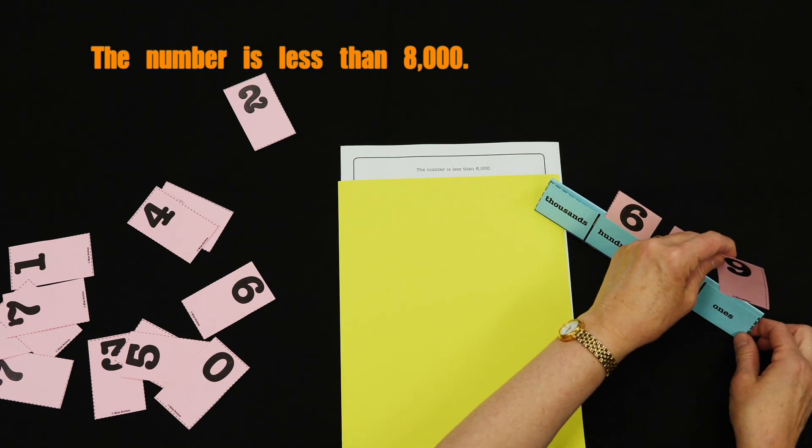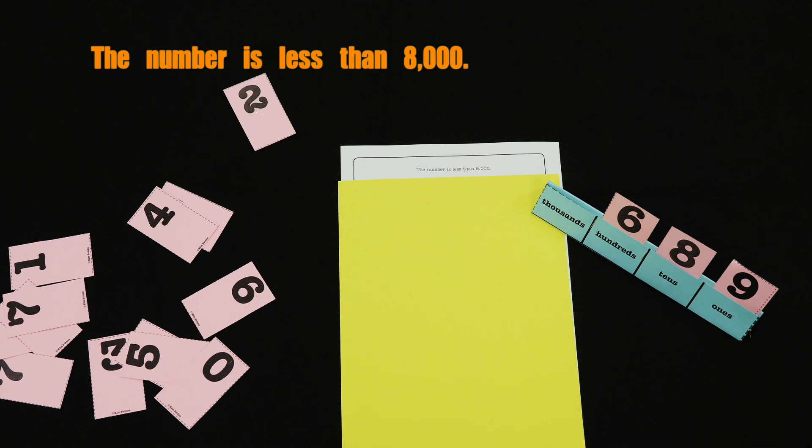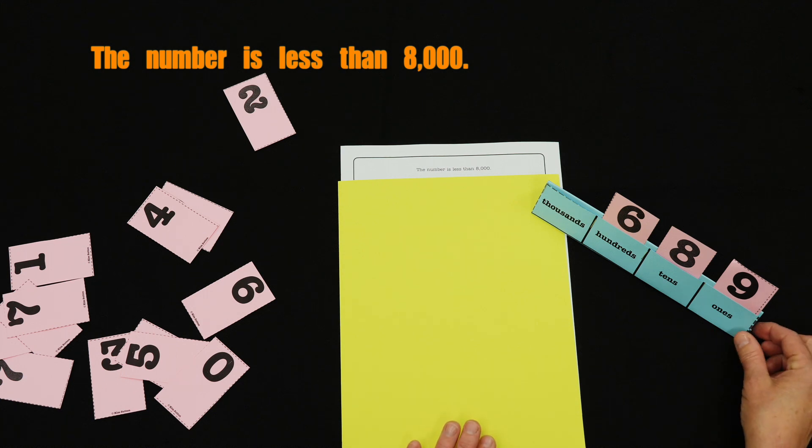Now on a clue like that, you're going to get a lot of different numbers at the beginning, but as the clues are given, the number narrows down in focus. One, two, three, show me.